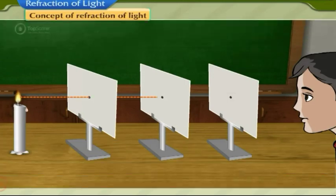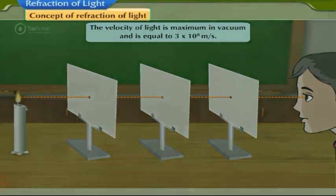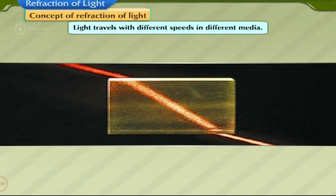Light travels along a straight line in a transparent medium. The velocity of light is maximum in vacuum and is equal to 3 × 10^8 meters per second. It is marginally less in air. It has been found that light rays propagate with different speeds in different media.